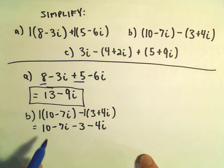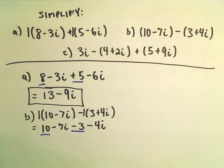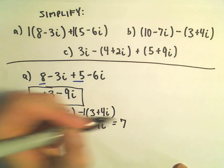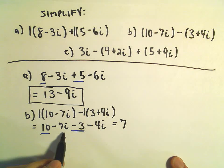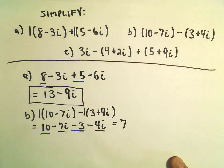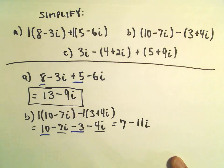And again, now I'm just combining. I see a positive 10 minus 3. 10 minus 3 will simply give me 7. And then we have a negative 7i minus 4i. That will give me a negative 11i.